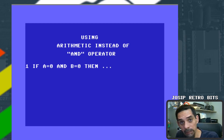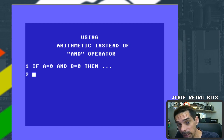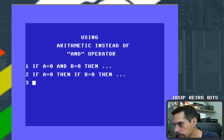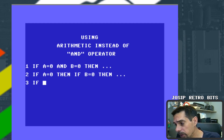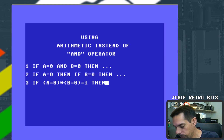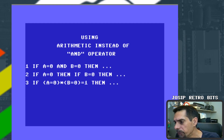Method two is nested IFs: if A equals zero, then if B equals zero, then do something. Method three uses the equality operator on individual variables — we check whether variable A equals zero and multiply that by B equals zero. If the result equals one, both variables are zero.